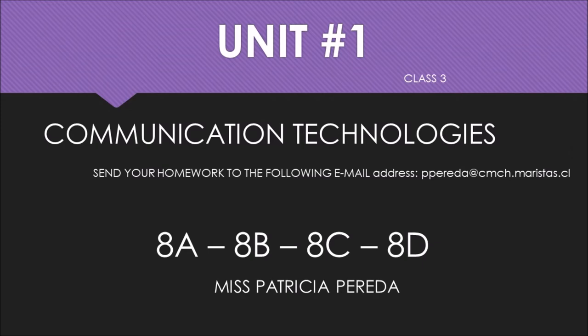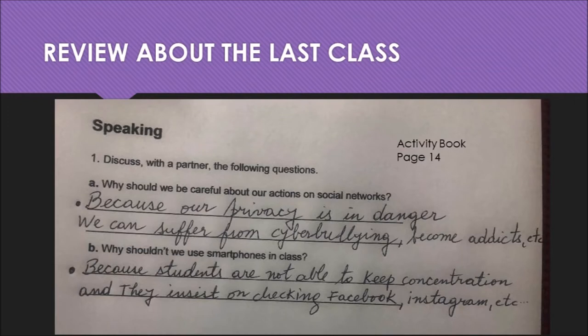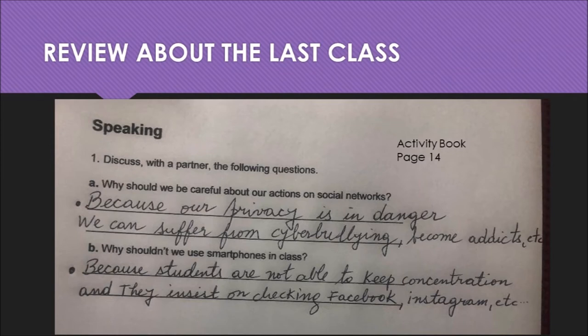So let's start with the first activity. It's a review about the last class. Es una revisión de algún aspecto de la clase anterior. You have two questions here. Why should we be careful about our actions on social networks? ¿Por qué deberíamos ser cuidadosos con nuestras acciones en las redes sociales? You have a lot of options for answers. Because our privacy is in danger, we can suffer from cyberbullying, become addicts, etc. Porque nuestra privacidad está en peligro, porque podemos sufrir de ciberacoso, volvernos adictos a las redes sociales, etc.